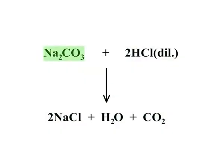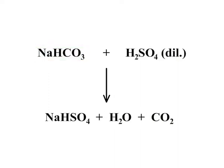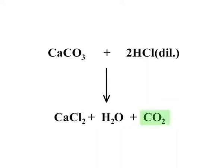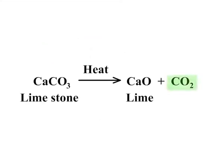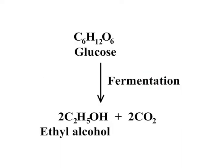Sodium carbonate reacts with dilute hydrochloric acid to form sodium chloride, water and carbon dioxide. Sodium bicarbonate reacts with dilute sulfuric acid to form sodium hydrogen sulfate, water and carbon dioxide. In the laboratory, carbon dioxide is prepared by the action of dilute hydrochloric acid on calcium carbonate. On a commercial scale, carbon dioxide is obtained as a by-product in the decomposition of limestone to form lime, and in the manufacture of ethyl alcohol as a result of fermentation of glucose present in cane sugar.